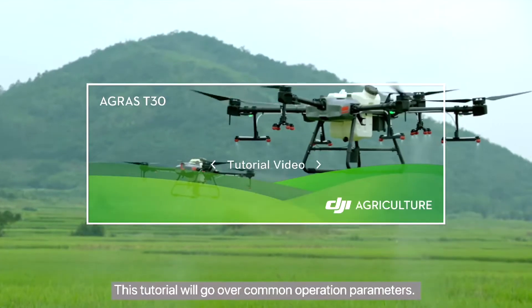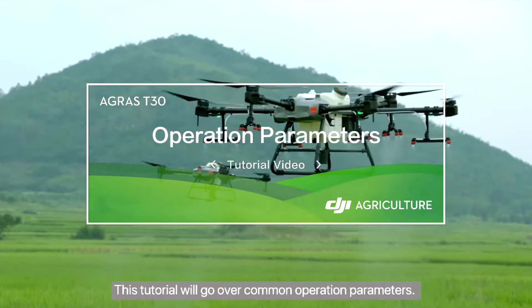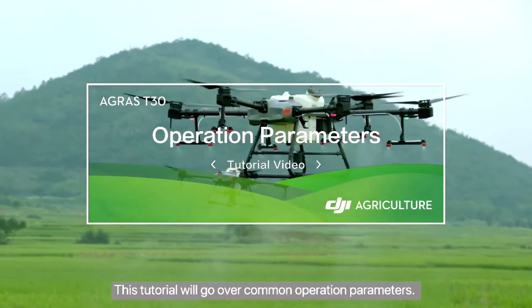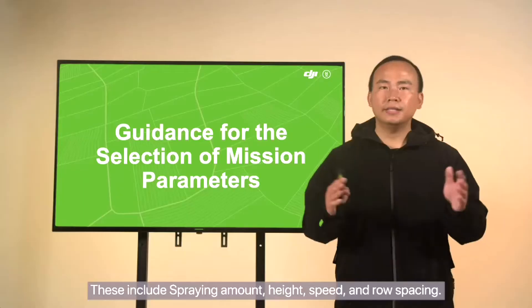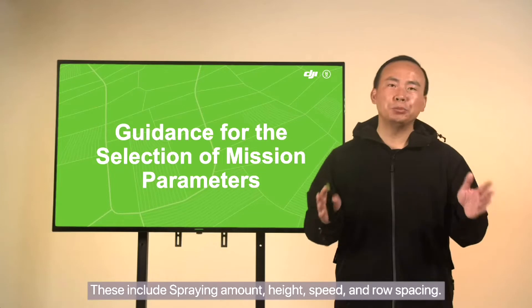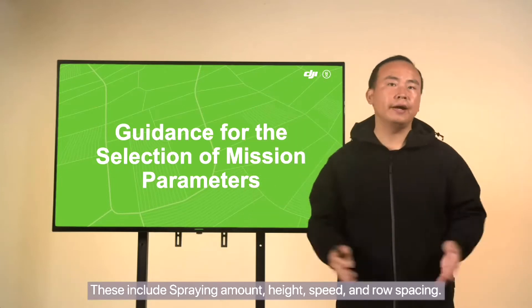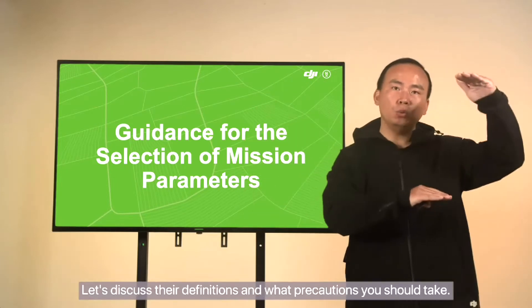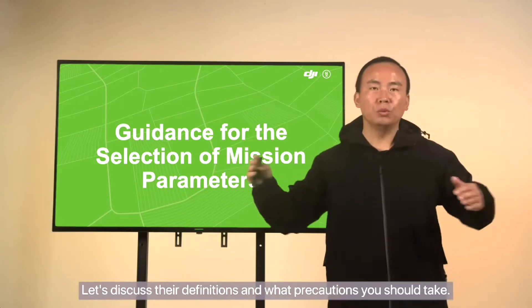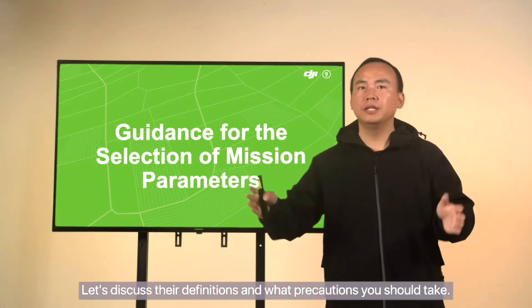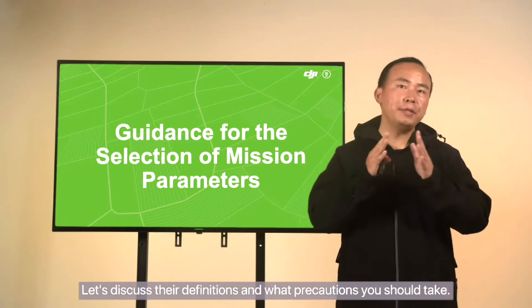This tutorial will go over common operation parameters. These include spraying amount, height speed, and row spacing. Let's discuss their definitions and what precautions you should take.